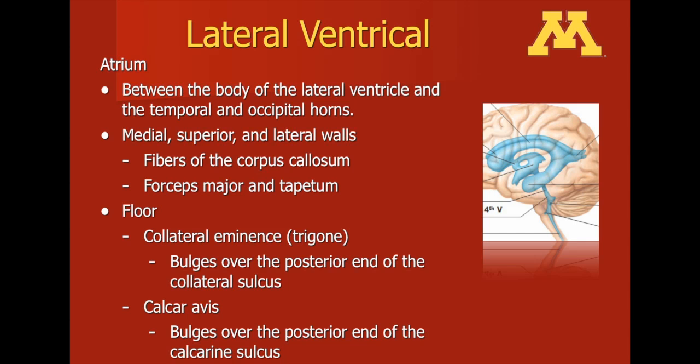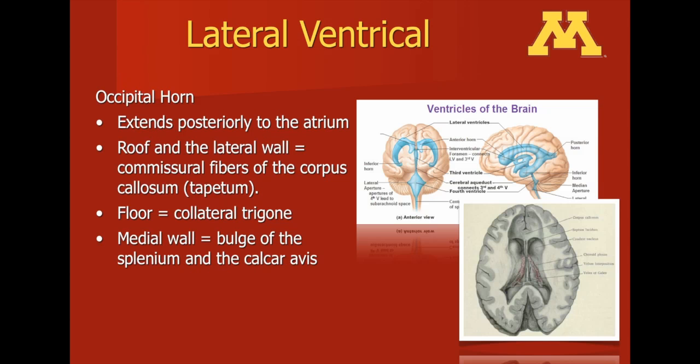A typical approach for this procedure would be through the parietal lobe, going through the brain and into the atrium. The occipital horn is also a part of the lateral ventricle and extends posteriorly from the atrium and into the occipital lobe of the brain.